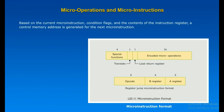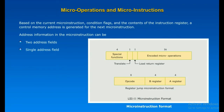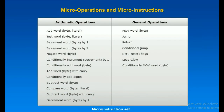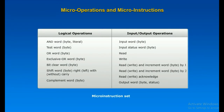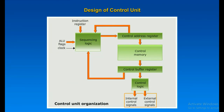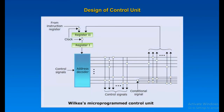Both conditional and unconditional branches are a necessary part of a microprogram. Based on the current microinstruction, condition flags, and the contents of the instruction register, a control memory address must be generated for the next microinstruction. Address information in the microinstruction can be in two address fields, a single address field, or variable format. Consider that there are a total of k different internal and external control signals to be driven by the control unit. In Wilkes' scheme, k bits of the microinstruction would be dedicated to this purpose, allowing all 2^k possible combinations of control signals to be generated. However, we can do better if we observe that not all possible combinations will be used.